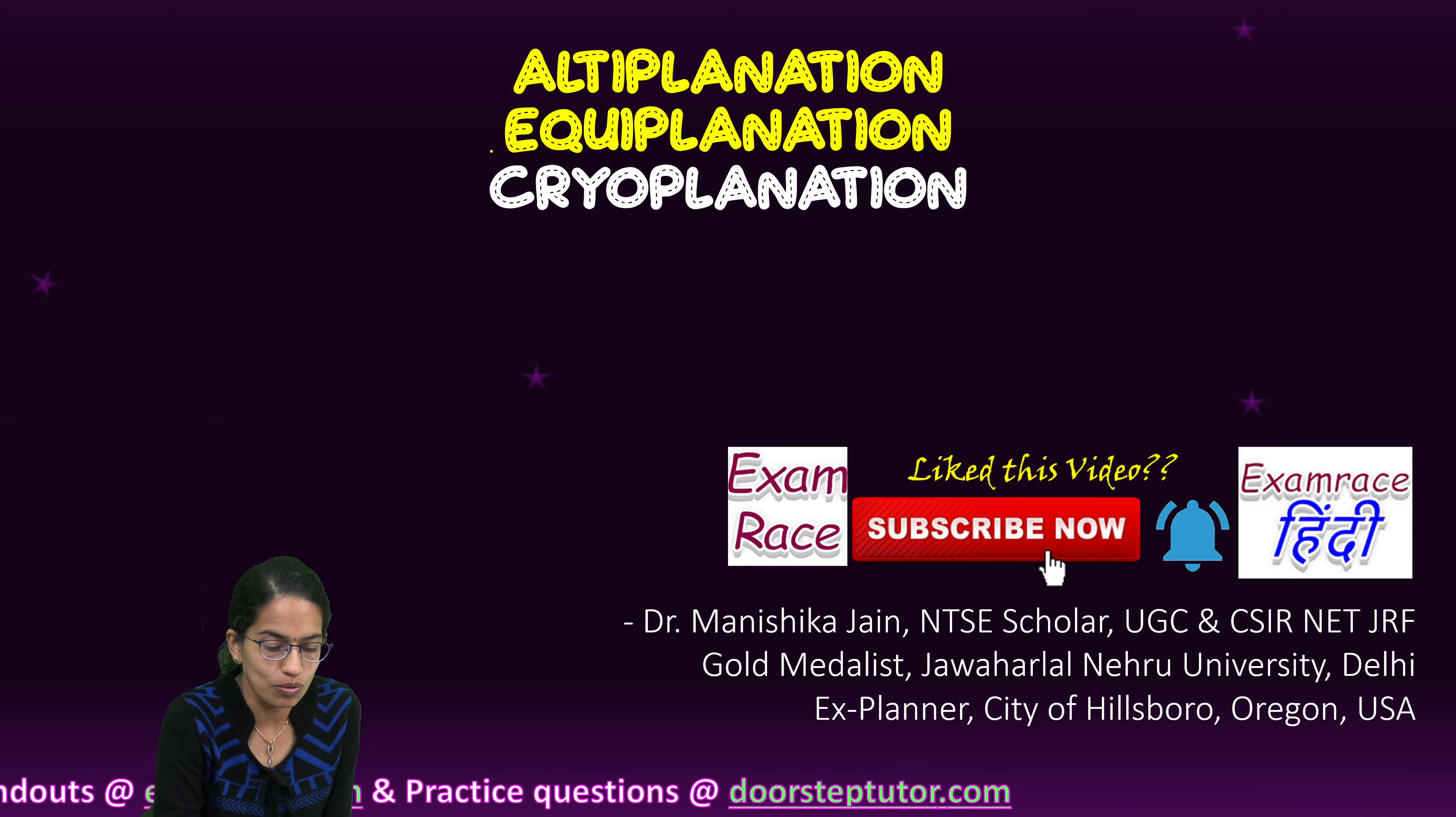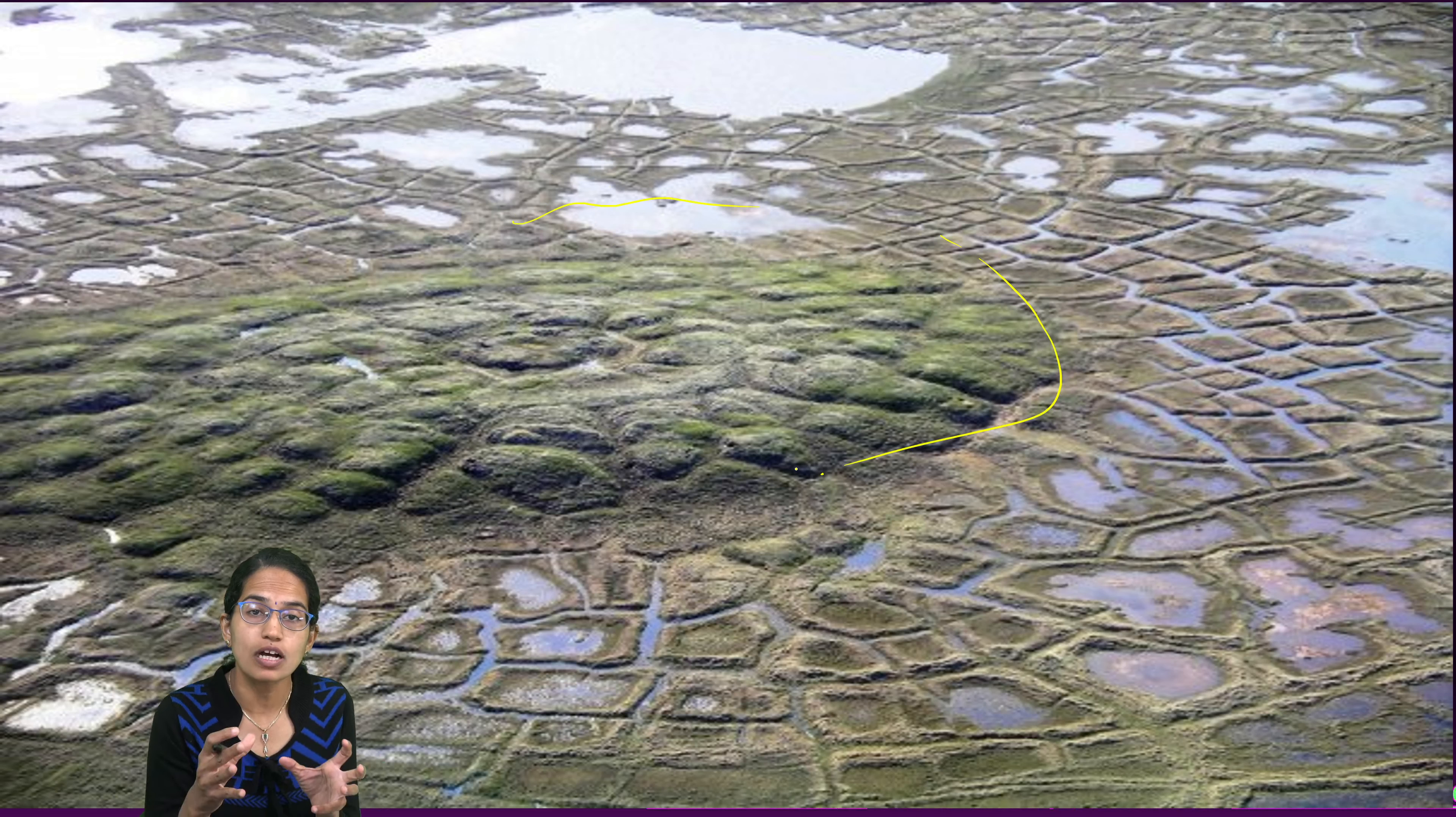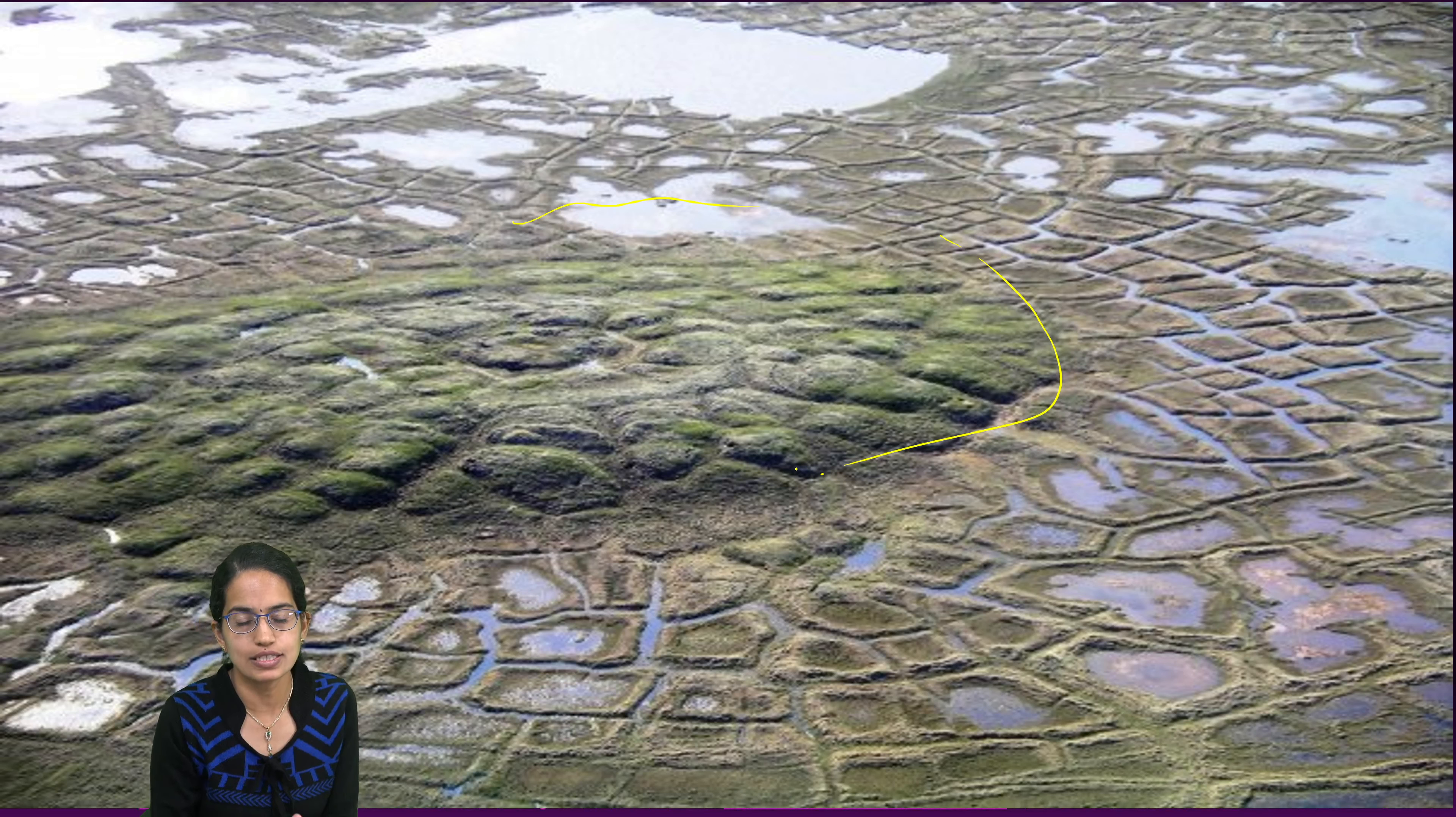Now, what are periglacial landforms? When we have a glacial landmass, the region close to the glacial landmass is a region which actually witnesses a lot of freeze and thaw activity. This region, periphery to the glacier, is the periglacial region.